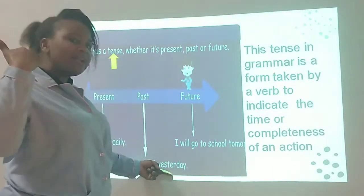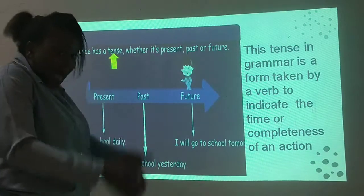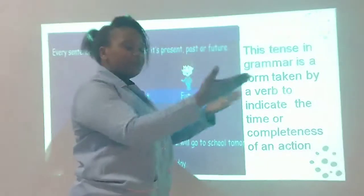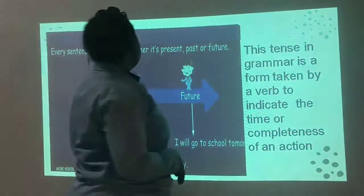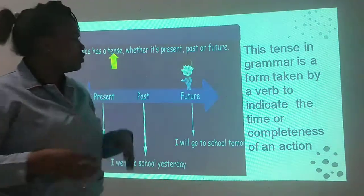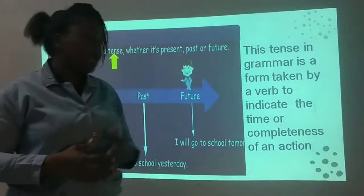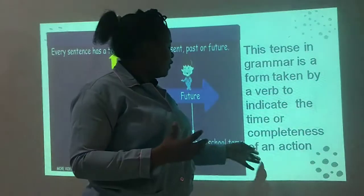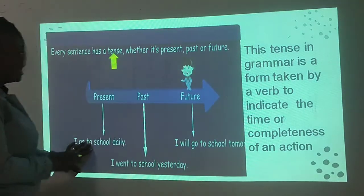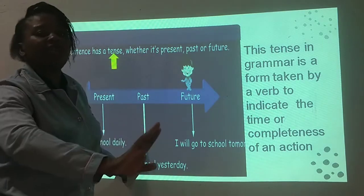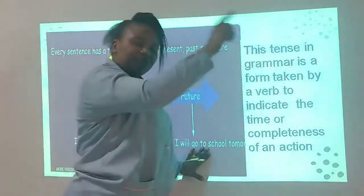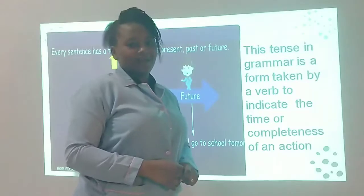That happened yesterday. Present — happening now. Future: 'I will go to school tomorrow.' So that is the future. Now, to explain tense a little bit: tense in grammar is a form taken by a verb to indicate the time or completeness of an action. It indicates that this is ongoing (present), that this is finished (past), and that this will be (future). Is that clear?